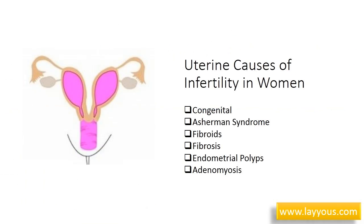Uterine causes of infertility in women are of six different types: congenital anomalies, Asherman syndrome, fibroids, fibrosis, endometrial polyp, and adenomyosis.